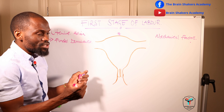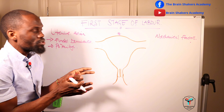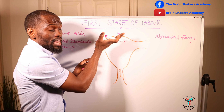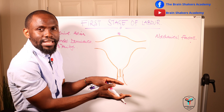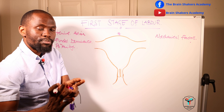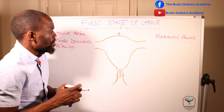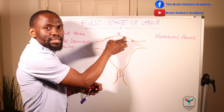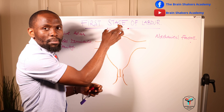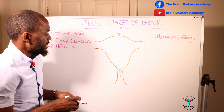Then we have what we call polarity. Polarity is the neuromuscular harmony that occurs between the upper uterine segment and the lower uterine segment. During pregnancy there is going to be formation of the upper uterine segment and the lower uterine segment — the body and the fundus forming the upper part, and the isthmus and the cervix forming the lower portion of the uterine segment.